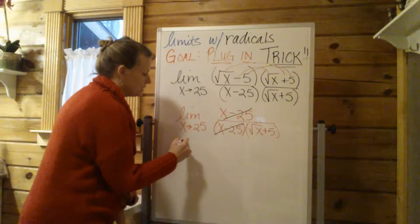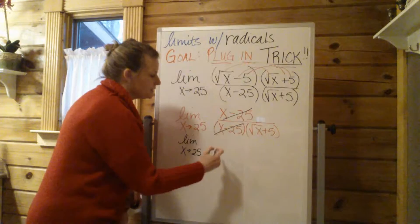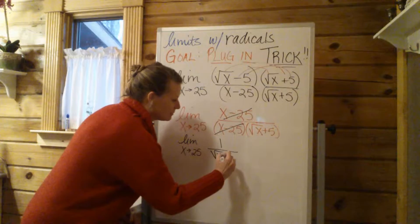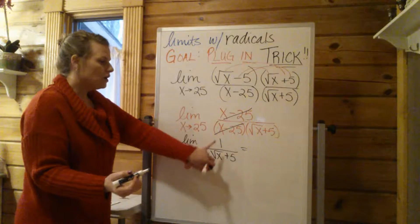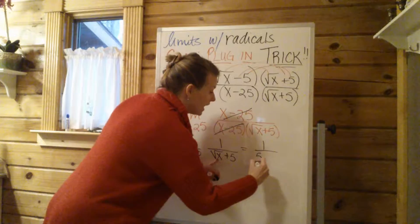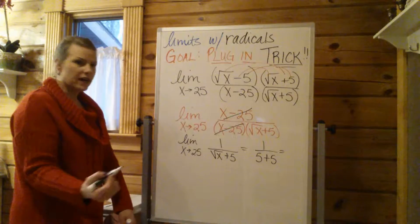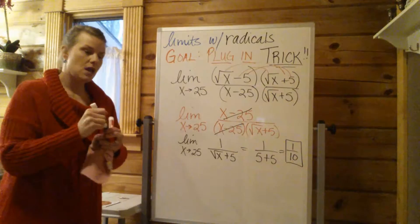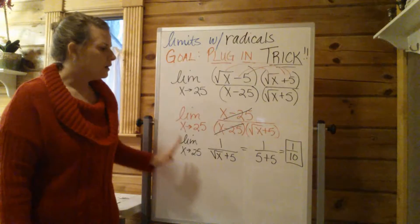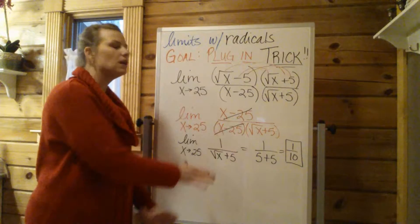And now what you're left with is, don't forget you still have the limit up top. You still have a 1, right? Don't forget that. But then you have the square root of x plus 5 in the bottom. Now you can plug the 25 in. 1 over the square root of 25, which is 5 plus 5, will give you a final answer of 1 tenth. The limit of this nasty expression as x approaches 25 when all is said and done equals 1 tenth.